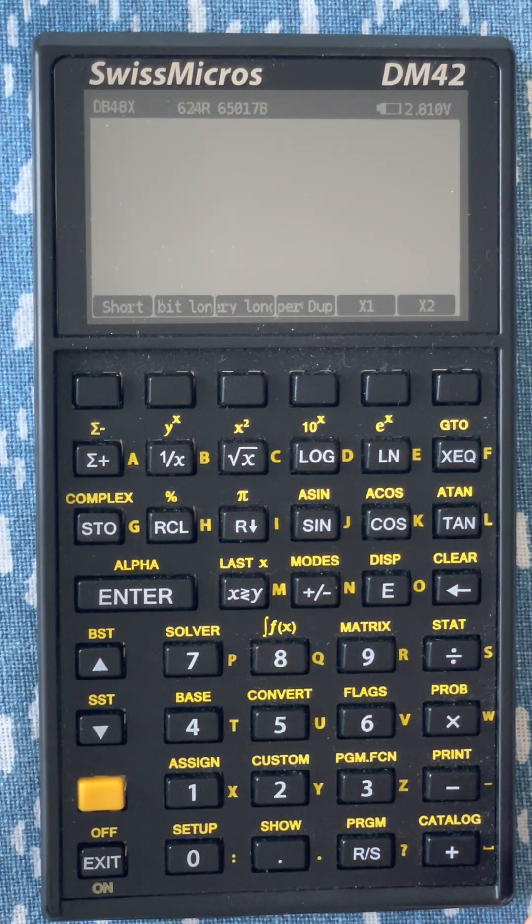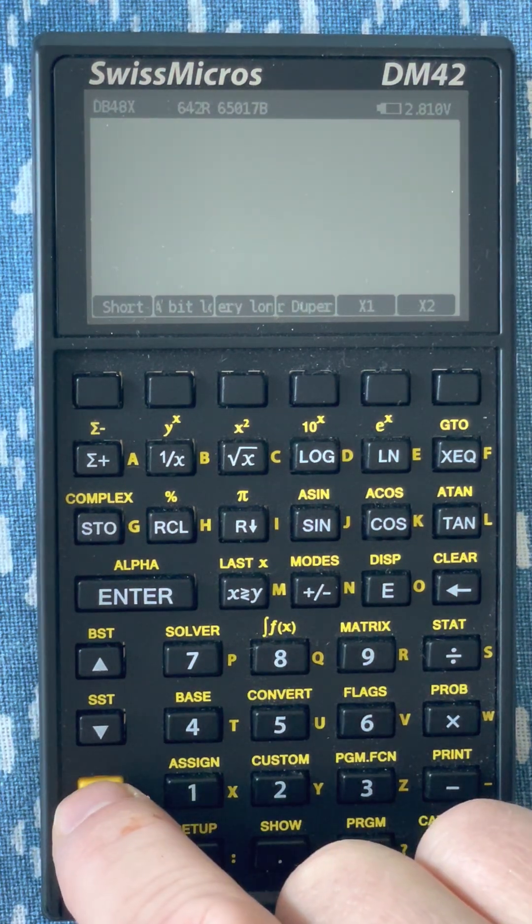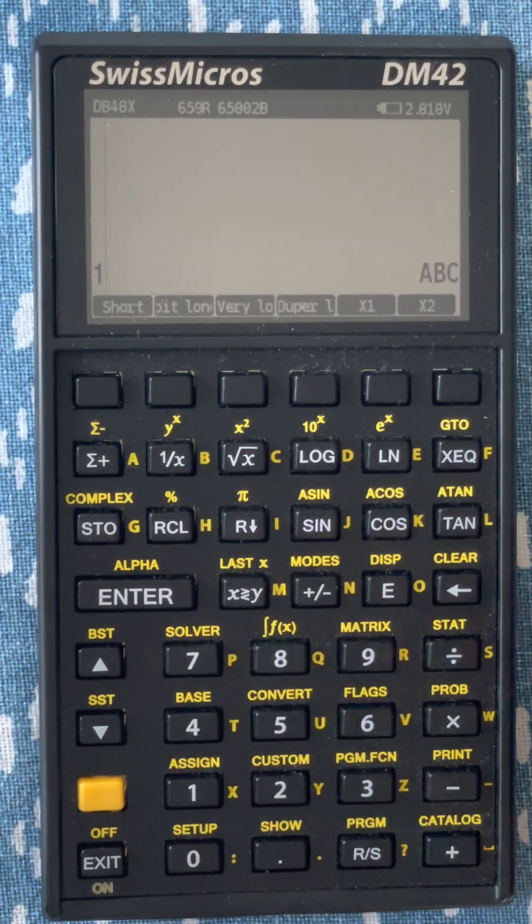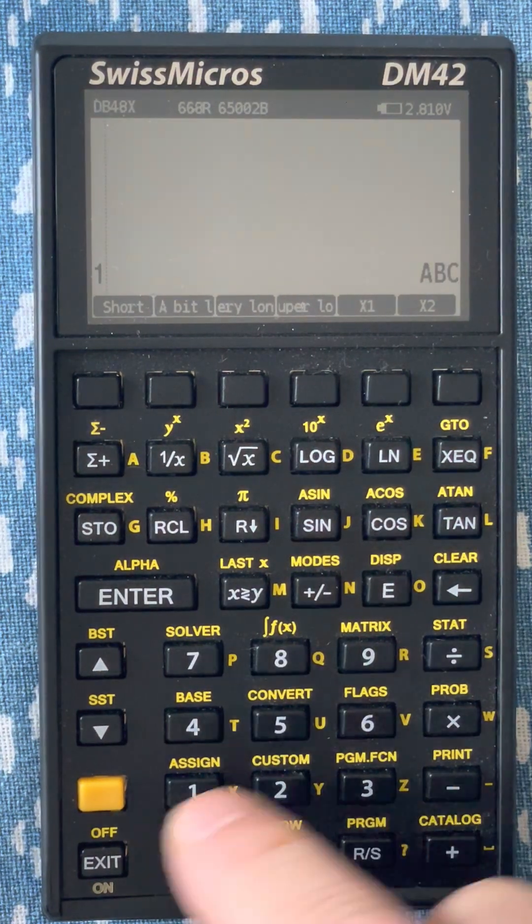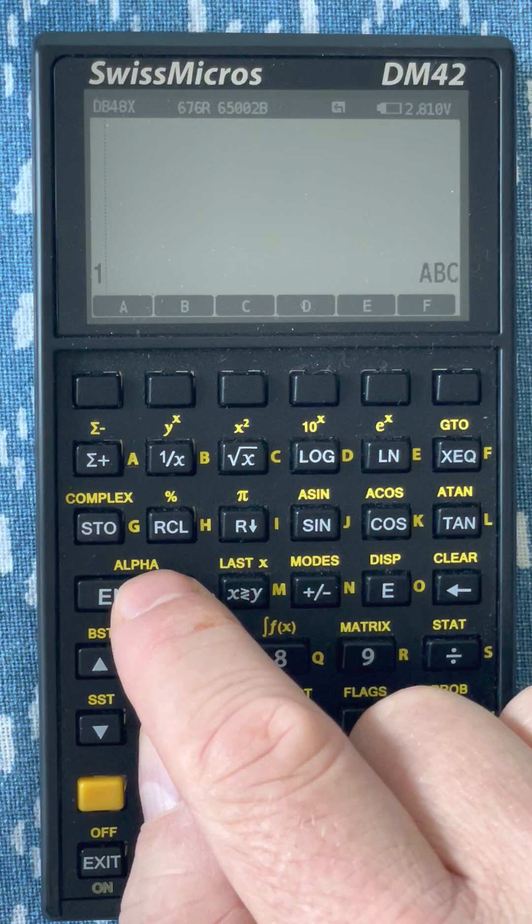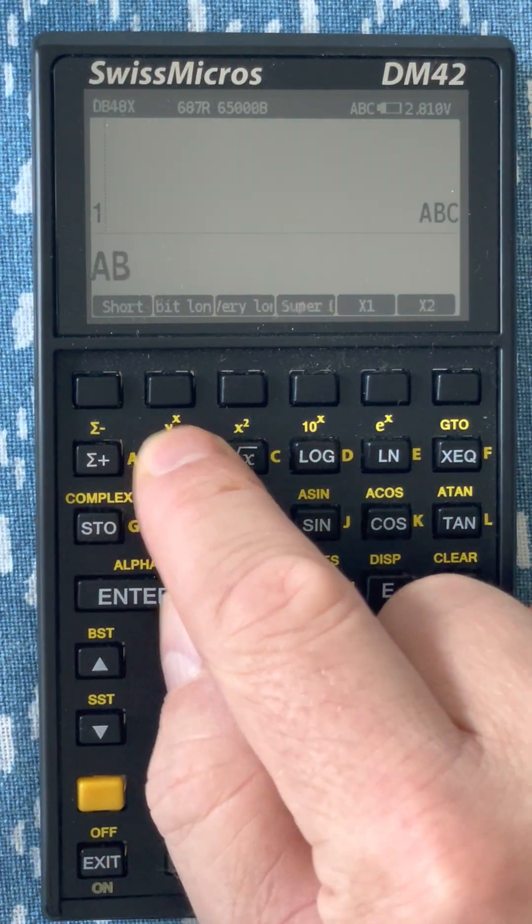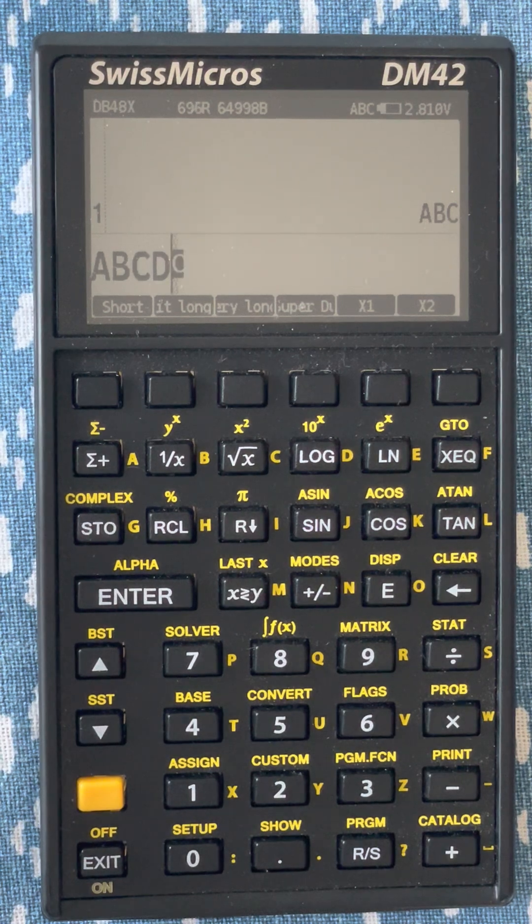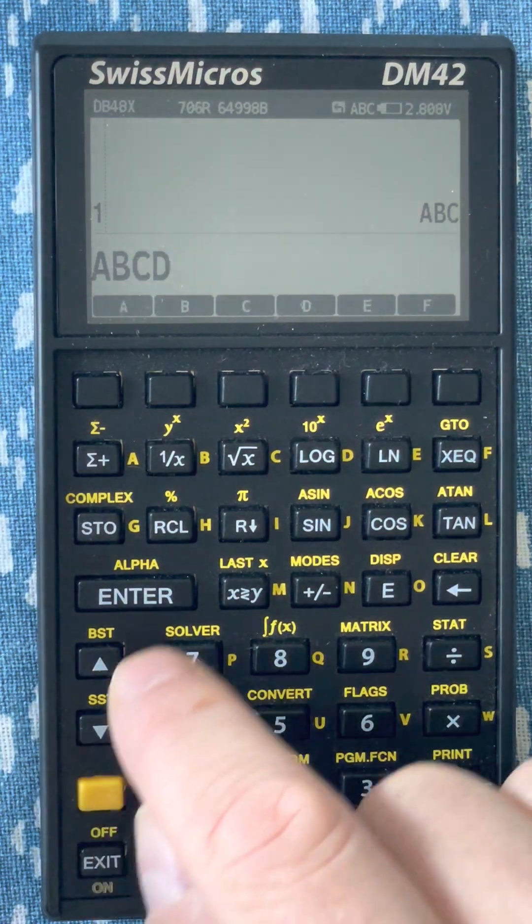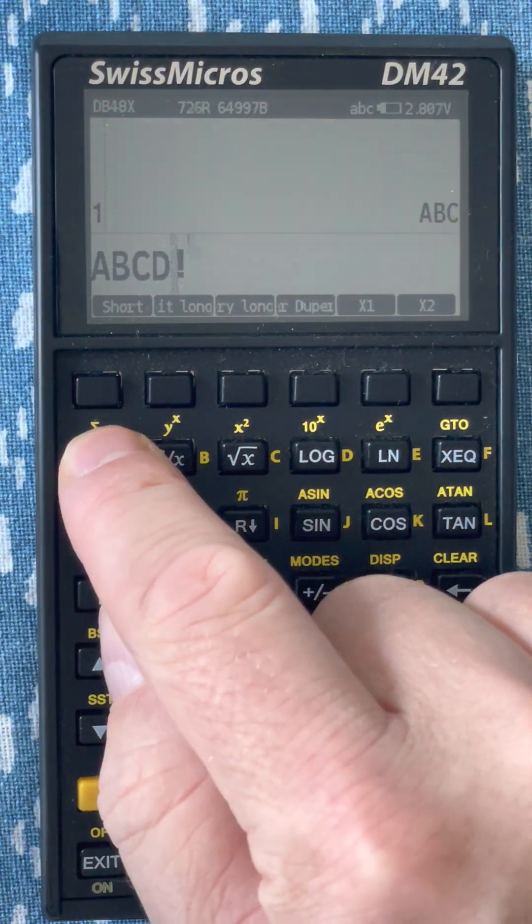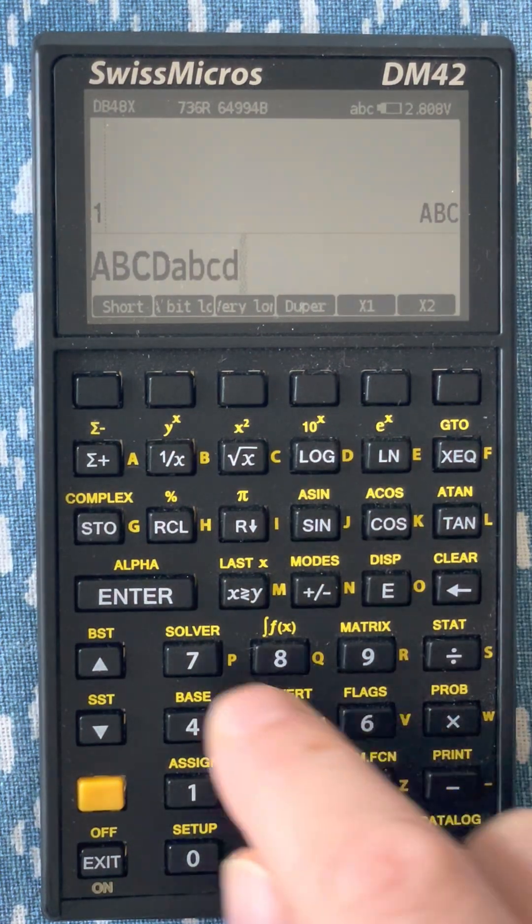And like the original HP48, there are multiple data types. For instance, I can enter symbols. You see that I typed shift plus alpha on the enter key to begin typing characters. If I hit shift alpha again, the indicator over there shifts to lowercase, and I can type lowercase.